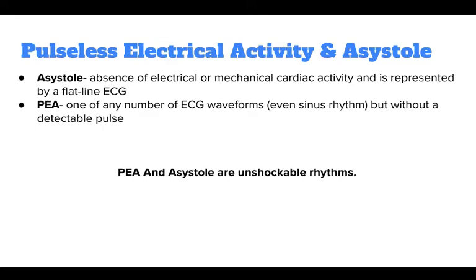Pulseless electrical activity or PEA and asystole are related cardiac rhythms in that they are both life-threatening and unshockable. Asystole is the absence of electrical or mechanical cardiac activity and is represented by a flatline ECG. There may be subtle movement away from baseline, but there is no perceptible cardiac electrical activity. Make sure that a reading of asystole is not a technical error — ensure the cardiac leads are connected, gain is set appropriately, and the power is on. Check two different leads to confirm. PEA is any number of ECG waveforms, even sinus rhythm, but without a detectable pulse. PEA may include any pulseless waveform except VF, VT, or asystole.